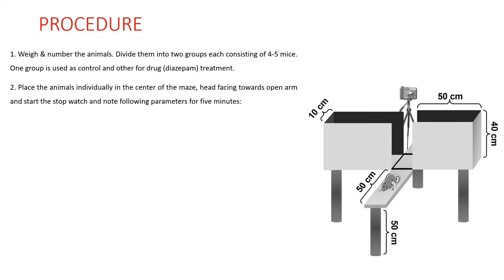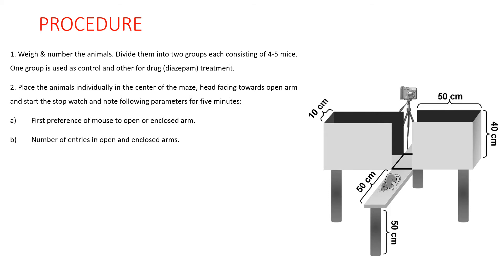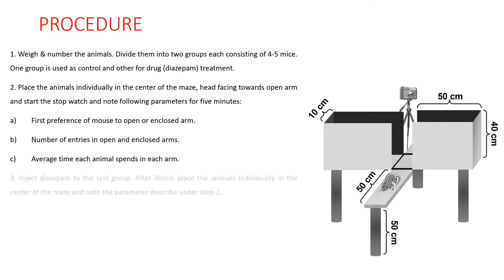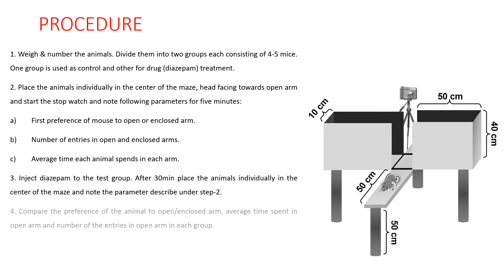Place each animal individually in the center of the maze with its head facing toward the open arm. Start the stopwatch and note the following parameters for 5 minutes: preference of the mouse to open or closed arm, number of entries in open and closed arms, and average time each animal spent in each arm. Then inject diazepam to the test group and after 30 minutes, place the animal individually in the center of the maze and note the same parameters.